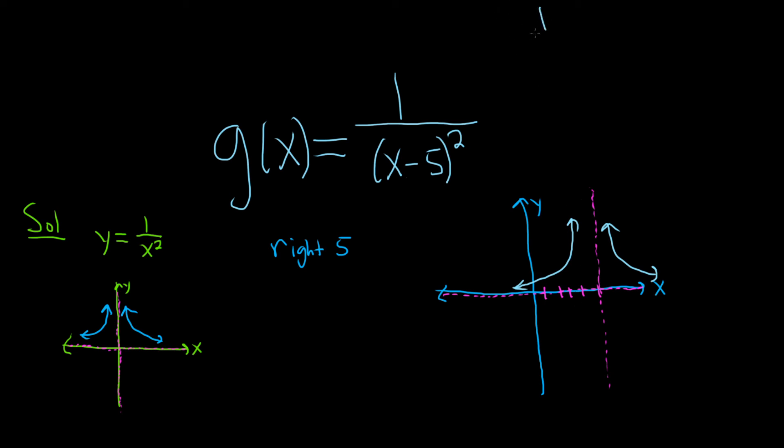Just to make sure you got it, if instead it was 1 over (x plus 5) squared, remember, it's backwards. Whenever you add to the x, it's backwards. You think it's right, but no it's left. So here we're adding 5, so it's going to be left 5.